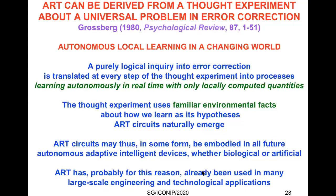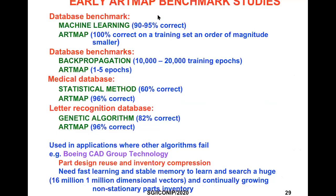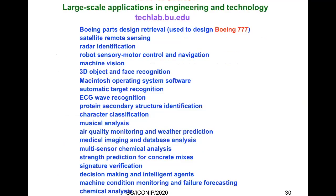ART has already been used in many large-scale engineering and technological applications. Almost immediately after ART was introduced, it began being used because it succeeded in benchmark studies against machine learning, backpropagation, statistical methods, and genetic algorithms — getting much better accuracy, much faster training speed, or both. It's also used in applications where other algorithms totally fail, such as the Boeing company's part design, reuse and inventory compression application. The Boeing parts design retrieval system was used to help design the Boeing 777.